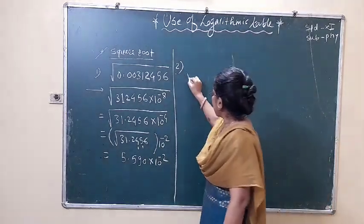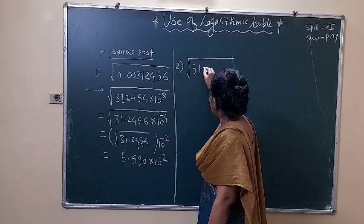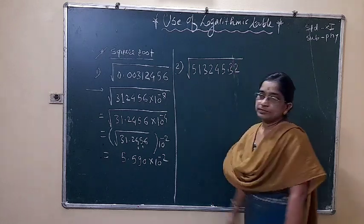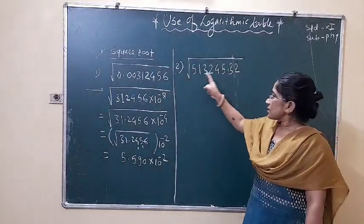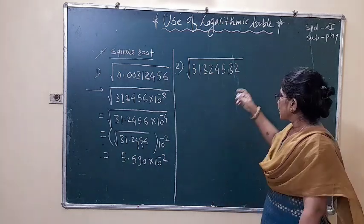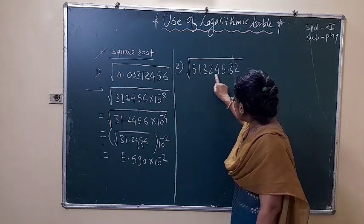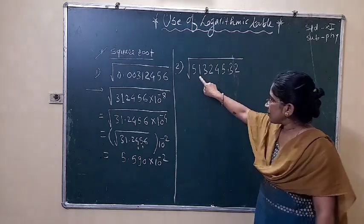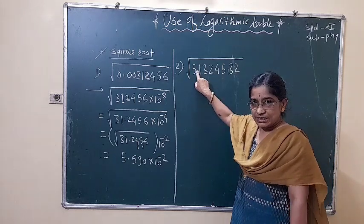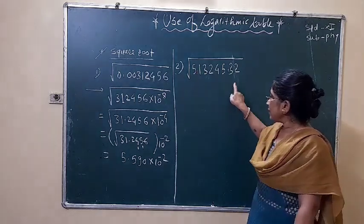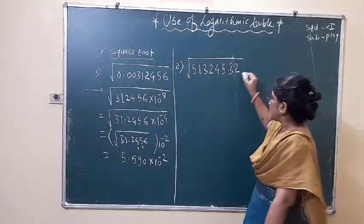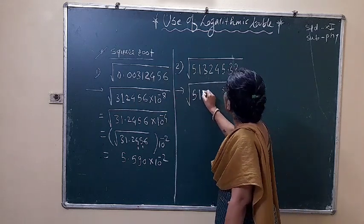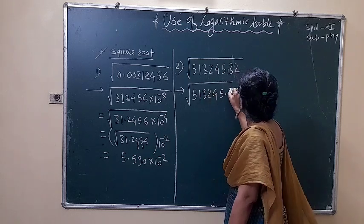Next example. If here we have 5132455.32, we have to adjust this number in one digit or two digits. This is 2 digits and the power is 10 raised to minus 4. We multiply the two digits. We multiply by 10 raised to minus 5. So minus 5 is the power. This is 10 raised to minus 4. Adjust this. Write this number as 5132453 adjusted.